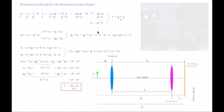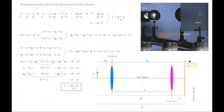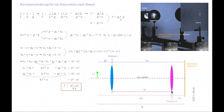Formelentwicklung für die Brennweite nach Bessel. Hier haben wir nochmal den Versuchsaufbau mit Gegenstand und Position 1 der Linse. Für Position 1 sind Gegenstandsweite und Bildweite eingetragen, für Position 2 gelten G2 und B2. Auf der Bildebene werden für beide Positionen scharfe Bilder erzeugt. Es gilt: G1+B1 = B2+G2 = Z, und der Abstand der beiden Positionen ist U.